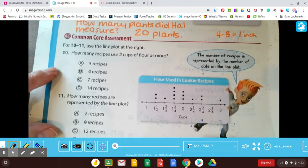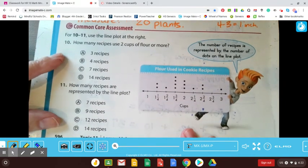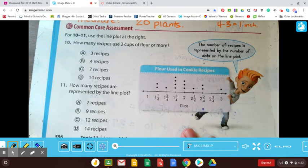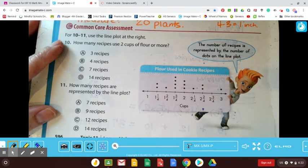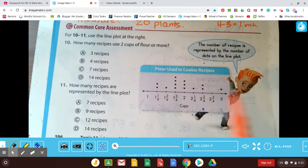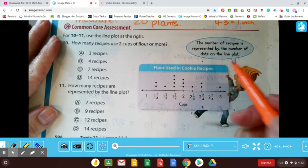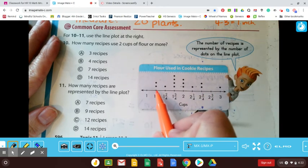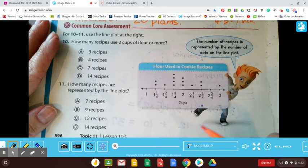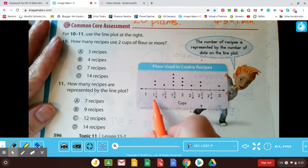All right. These questions down below are kind of spiraling back to a few of the things that we learned, but also using a line plot to help us. So it's talking about the amount of flour used in cookie recipes. Have you guys been like doing a lot of maybe baking over this quarantine? I know I've made some pumpkin bread. I've made an apple pie. We're making brownies almost every day. Lots of baking.